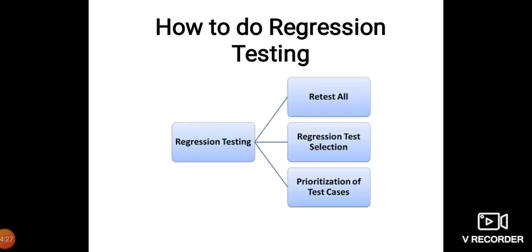Software maintenance is an activity which includes enhancement, error correction, optimization, and deletion of existing features. These modifications may cause the system to work incorrectly, therefore regression testing becomes necessary. Regression testing can be carried out using four approaches shown in a diagram: retest all, regression test selection, and prioritization of test cases.